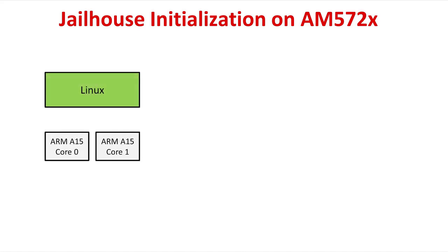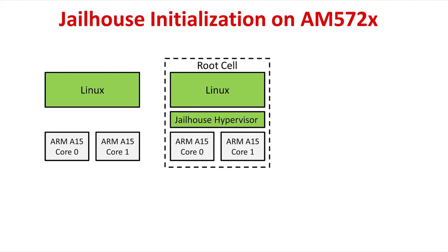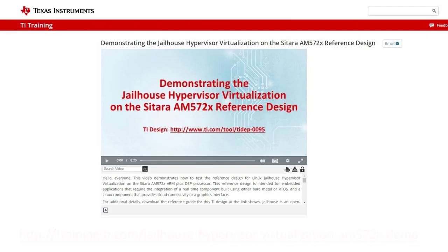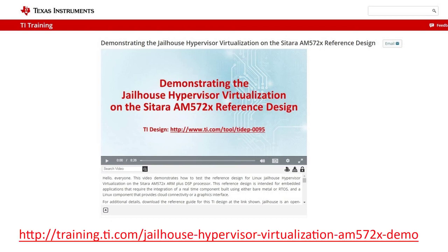Let's take a high-level look at the jailhouse hypervisor initialization process. The diagram shows the AM5728 has two ARM Cortex-A15 cores. Upon initial boot, Linux uses both ARM cores before jailhouse is enabled. After enabling jailhouse hypervisor and creating the root cell, Linux moves to the root cell which still uses both ARM cores. When an inmate cell is created, jailhouse hypervisor calls the CPU down function for the ARM1 core, leaving Linux on ARM0 only. The new cell uses the ARM1 core and hardware resources dedicated for that cell as defined in the cell configuration file.